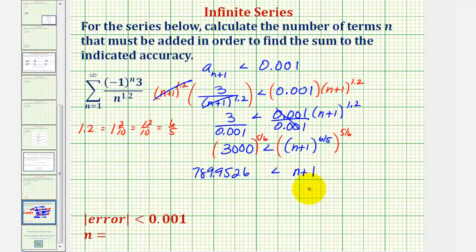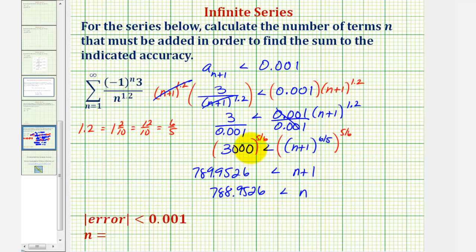So to solve for n, we would subtract 1 on both sides. So we'd have n must be greater than 788.9526. And therefore, if we want the error to be less than 0.001, we'd have to use n equals 789, since we know n has to be a whole number.